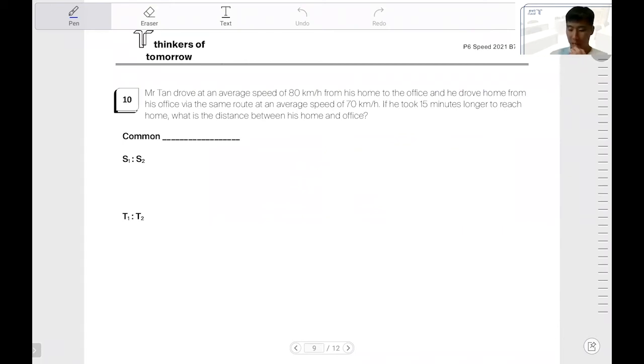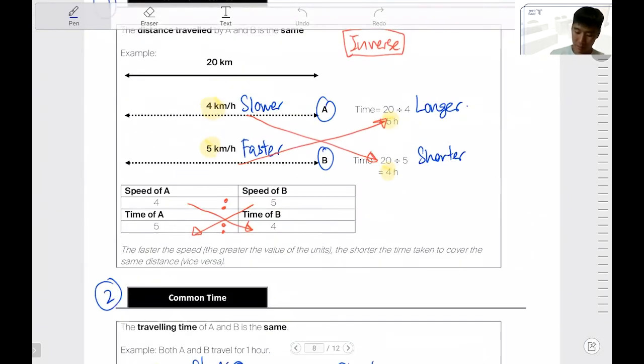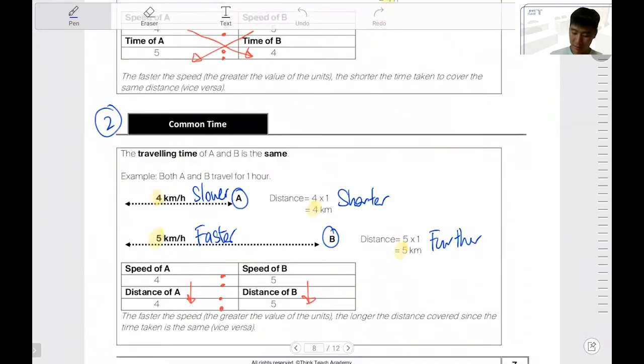Okay, so Mr. Tan drove an average speed of 80 km per hour from his home to the office and he drove home from his office via the same route at an average speed of 70 km per hour. So already right now, I can see that it is 80 to 70, just like the table that we have here. This table that we have here, it is 80 to 70, the speed.